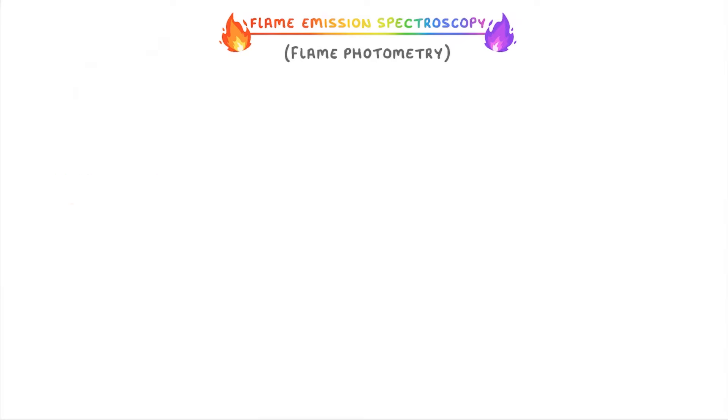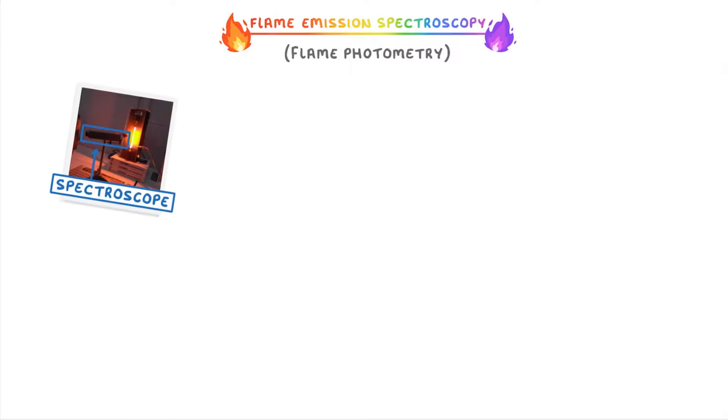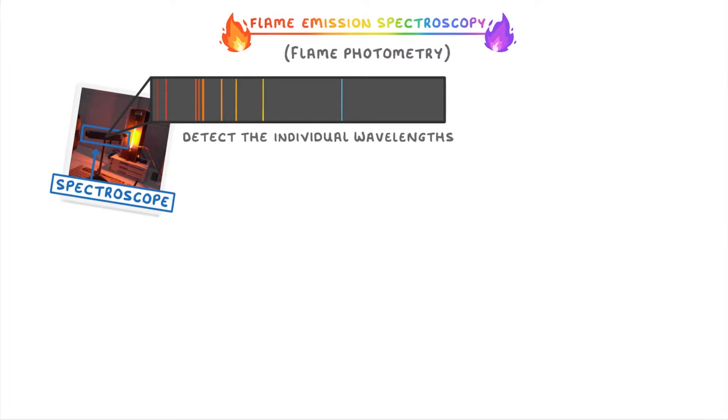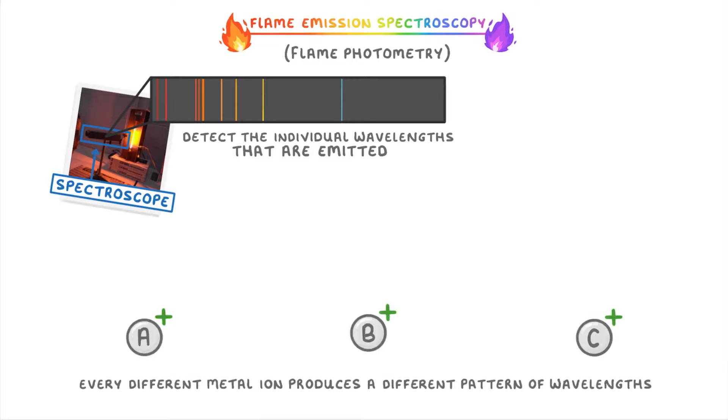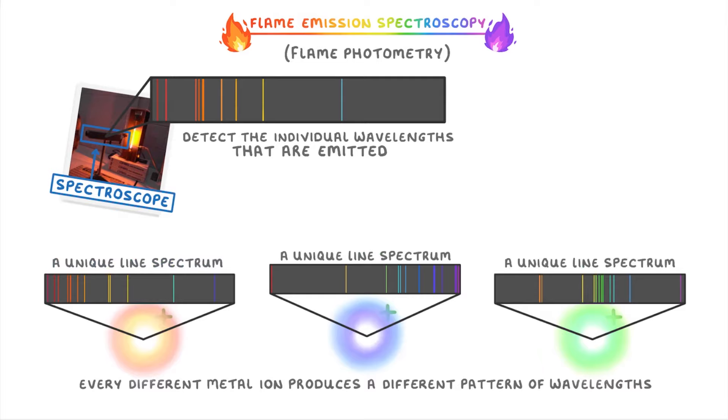Flame emission spectroscopy, though, overcomes these problems by using a spectroscope, which can detect the individual wavelengths of light that are emitted. And importantly, every different metal ion produces a different pattern of wavelengths, and so has a unique line spectrum that we can use to identify that metal.